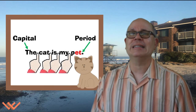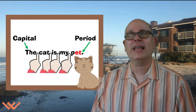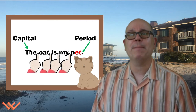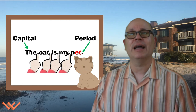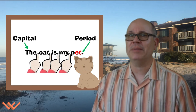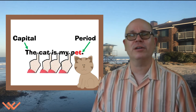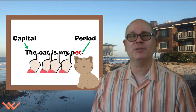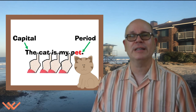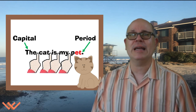The second sentence is, The cat is my pet. Again, capital in the beginning. It's a little longer, so we have more finger spaces to do between words, and then we end with a period.